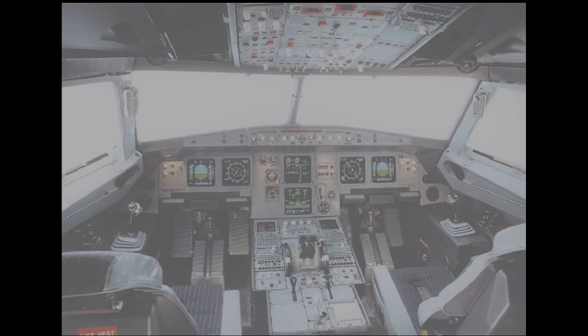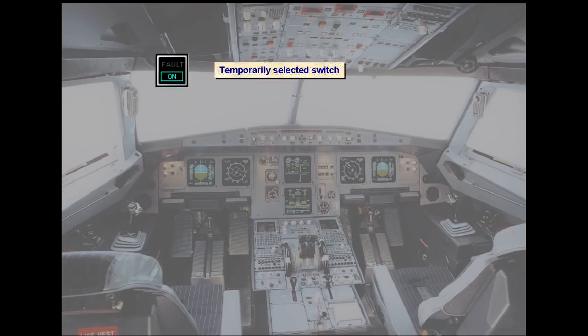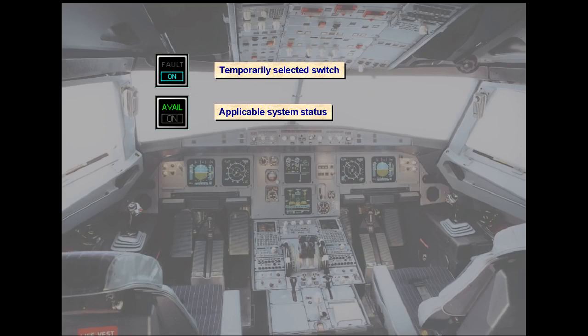There are some switches on the overhead panel which are used on a temporary basis, or may have an indication of their state. The logic is: temporary selection for operational reasons — blue on light, such as anti-ice. Applicable system status — green light, such as APU available.